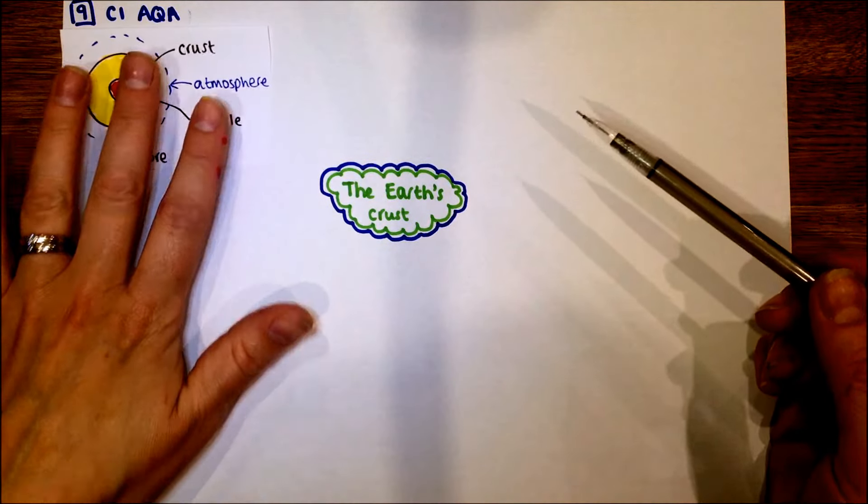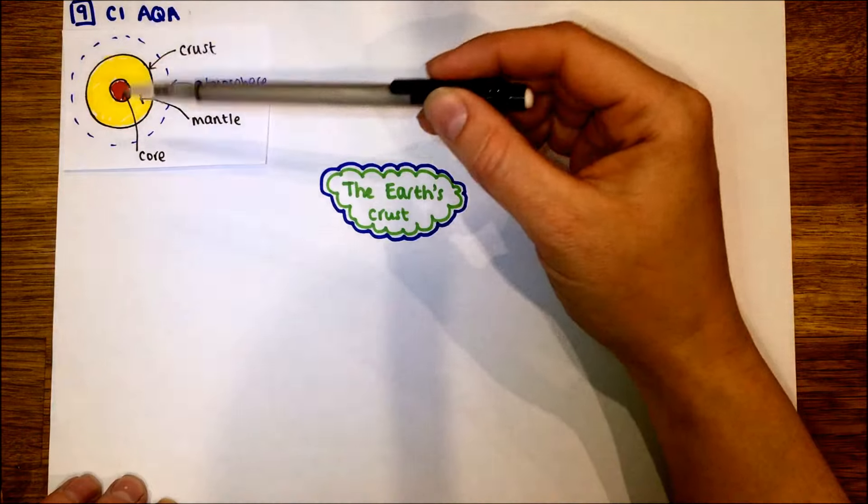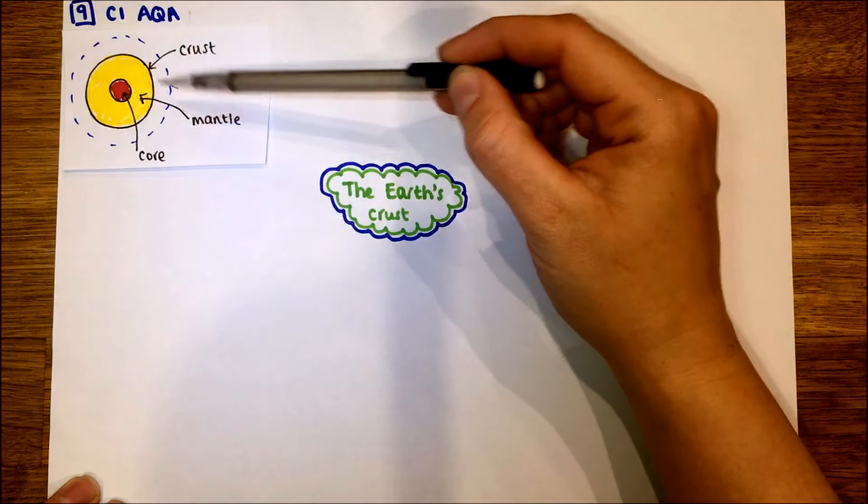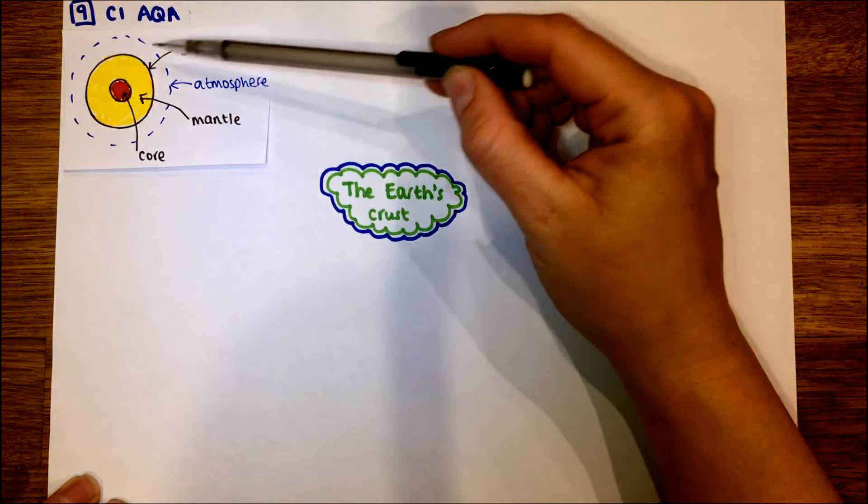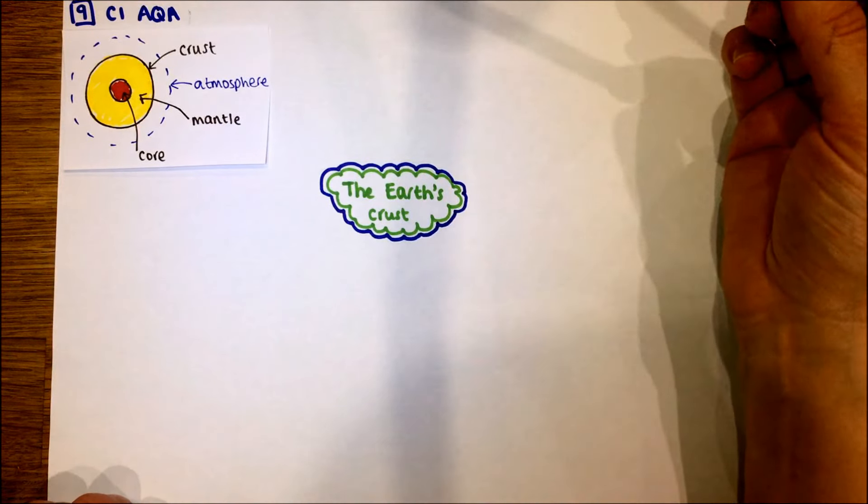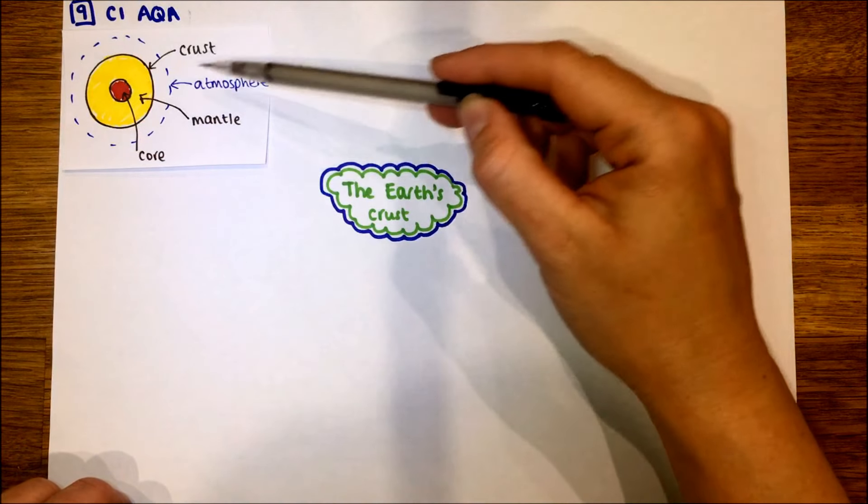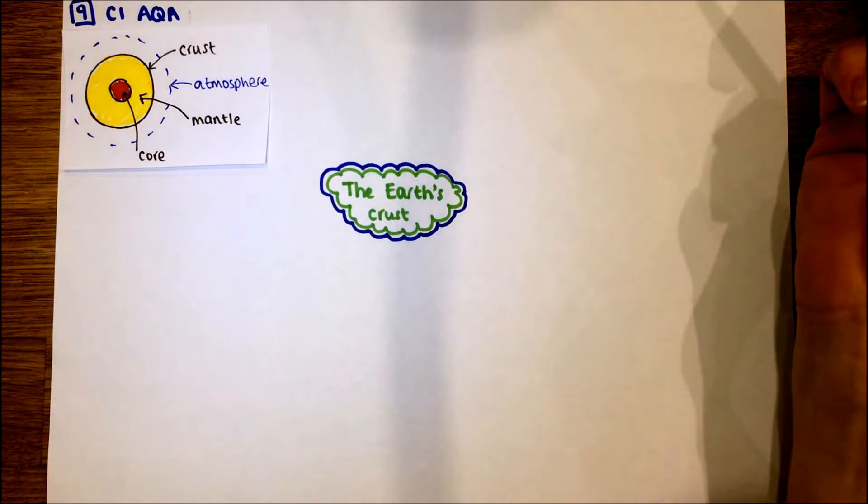First of all, you need to know the layers within the Earth. You've got the core in the centre, which is a solid iron core, surrounded by the mantle, which is more liquid, and then on the top is a solid crust. Surrounding all of that is our atmosphere. Just be aware that is also a label sometimes you need to add.